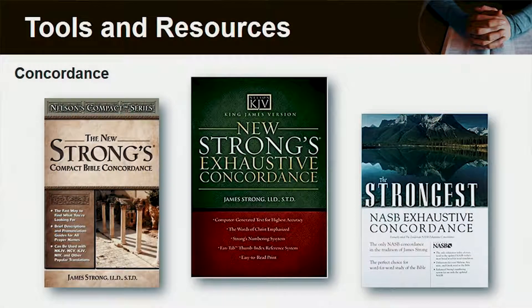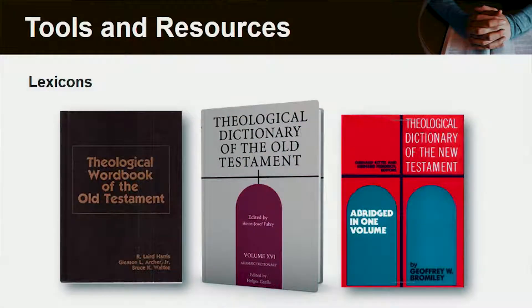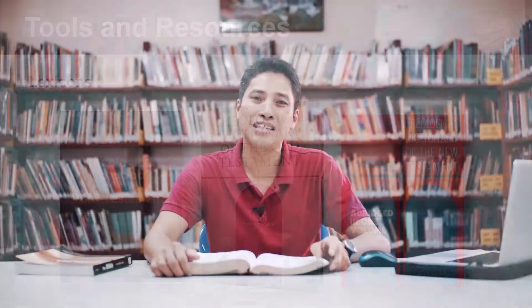First, we need some concordances. A concordance is a book that shows you the occurrences of one word in the whole Bible. So if you are going to look at the word 'love,' for example, and go to the concordance, then you will find how many times the word 'love' is used in a certain book and in the whole Bible. Another helpful tool are Bible lexicons. For the Old Testament, it's helpful to go to the Theological Dictionary of the Old Testament, or TDOT.